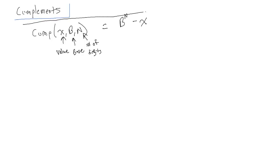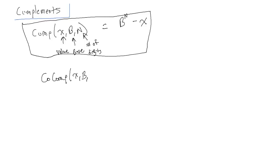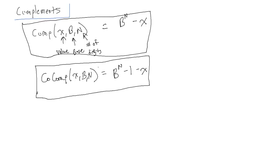We're calling this the complement function. Let's define another function called the co-complement function, which accepts the same inputs. It's equal to b^n minus 1 minus x. As you can see, they're really similar — this one just has b^n minus 1, while the complement doesn't have the minus 1. Because of that, we can relate the two: the complement of (x, b, n) is equal to the co-complement of (x, b, n) plus 1.